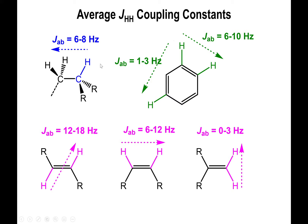The value is going to tell you a little bit about the overall interaction that you're dealing with. Your typical alkanes — that interaction happens to be around 6 to 8 Hertz, and that's your typical value for the alkane H-to-H coupling constants. When you're looking at your aromatics, if the hydrogens are next door, they tend to have a greater interaction simply because they are closer together, so you have a 6 to 10 Hertz coupling constant interaction.